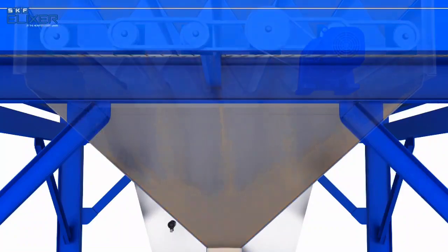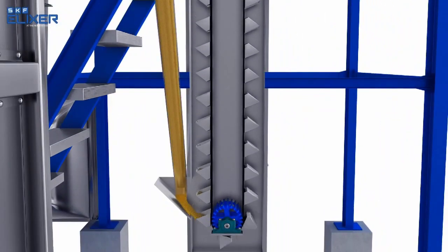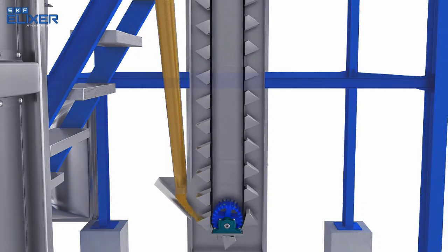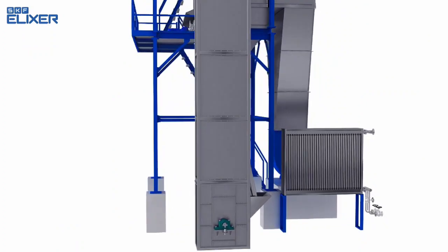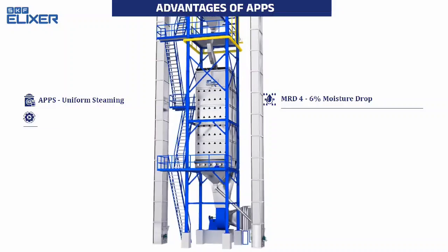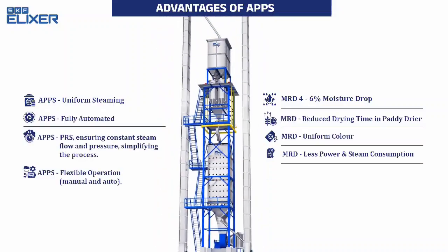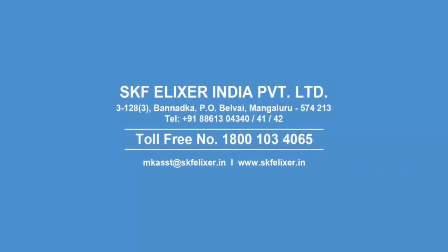This initiates the continuous process, which completes once a batch is fed to the dryer and the grain temperature exiting the MRD is reduced, thereby aiding in uniform color maintenance. Thus, paddy moisture has been reduced, increasing the life of the elevator.